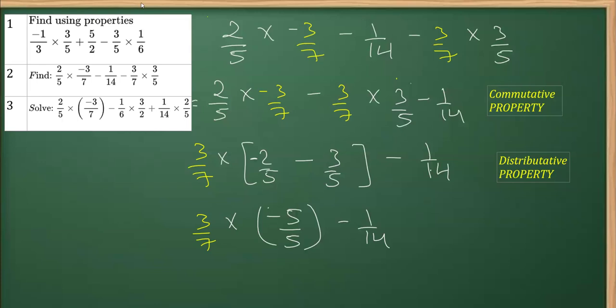So clearly this 5 and 5 get cancelled, so we'll get -1 from here. In turn we'll get -3/7 minus 1/14 because this is -1, right? -1 multiplied by 3/7 is -3/7.